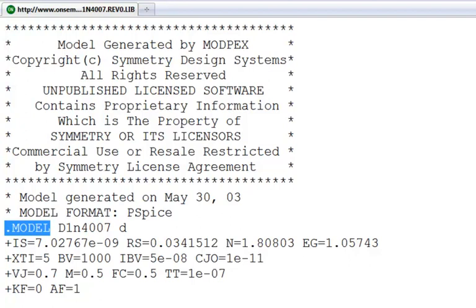If we look at this dot-model statement, we see that the first argument here is the name of the model, D1N4007, and we'll reference that later on from within the context of our circuit simulation in LTSpice 4.